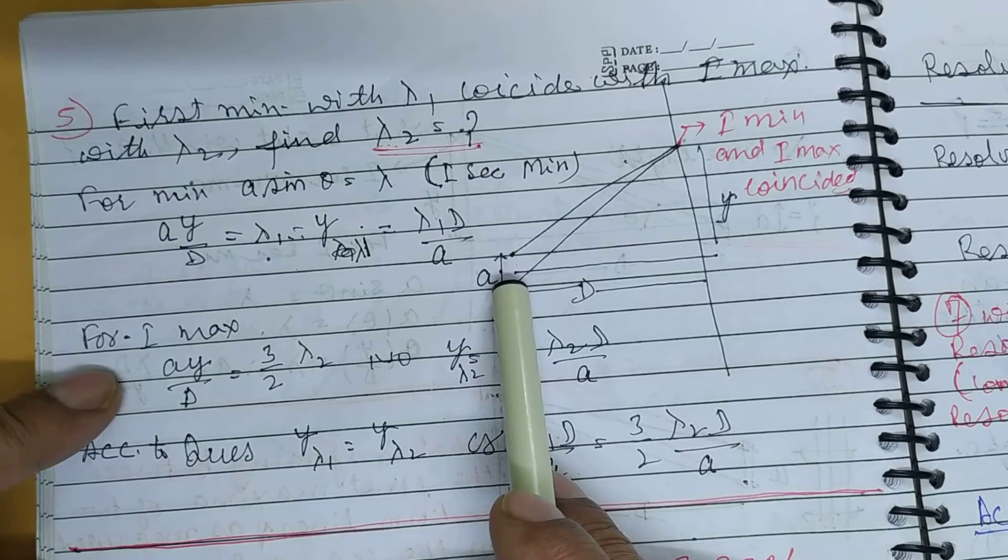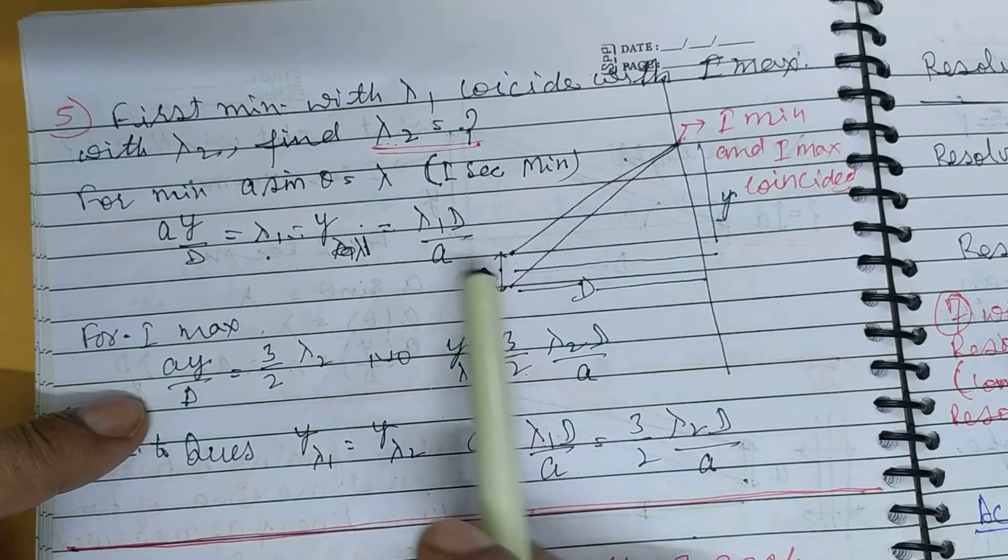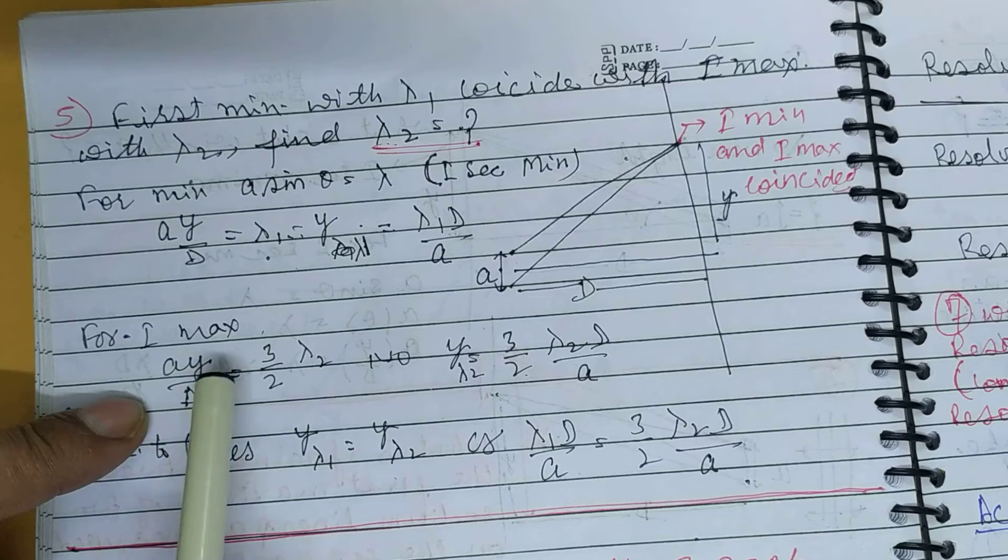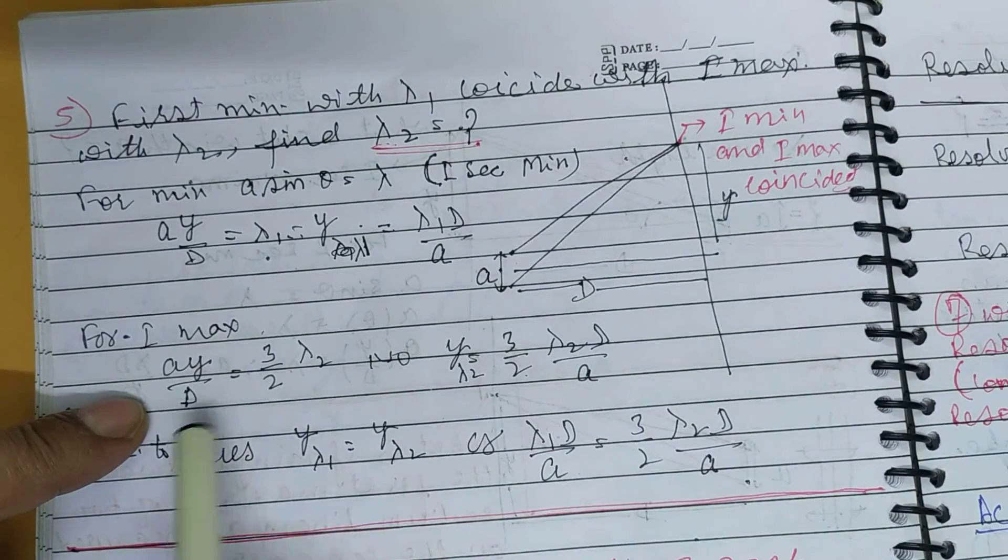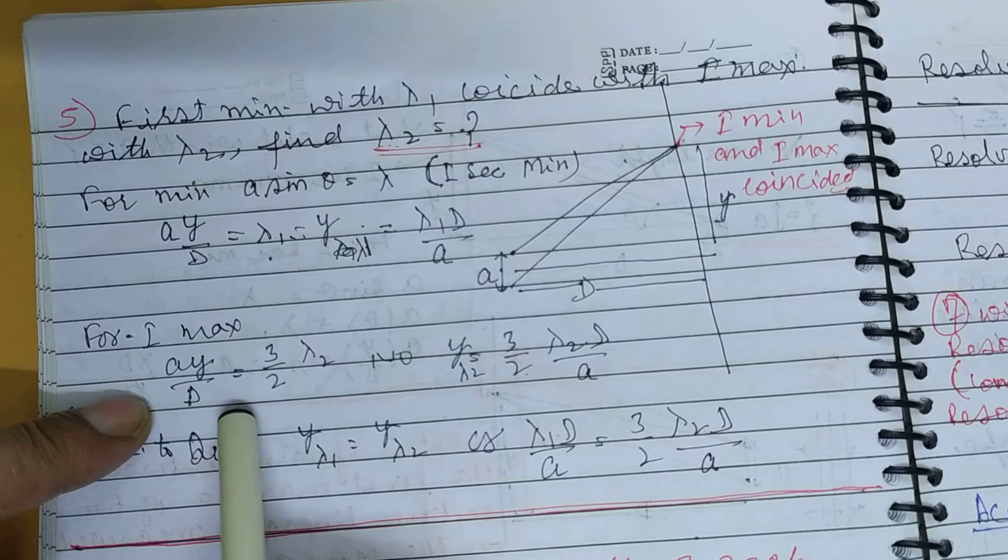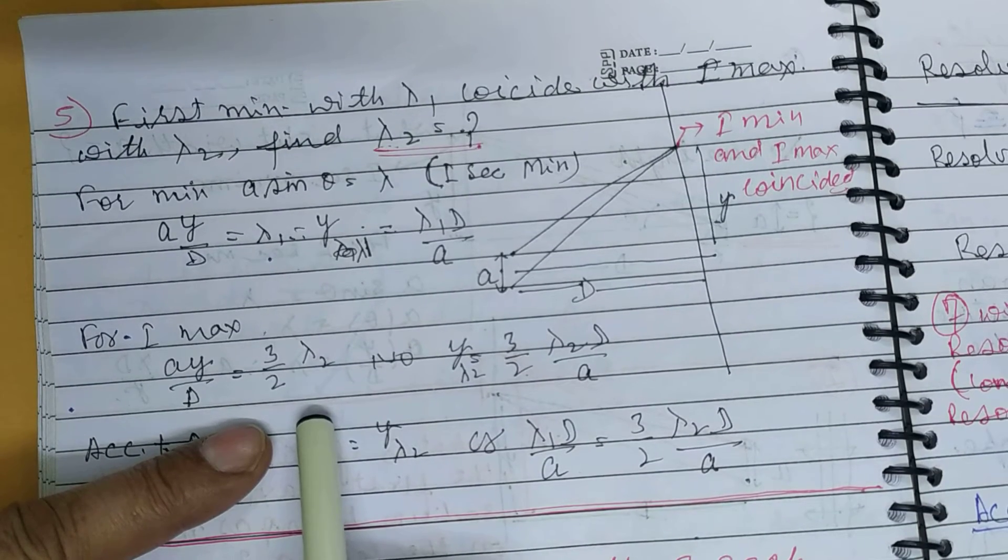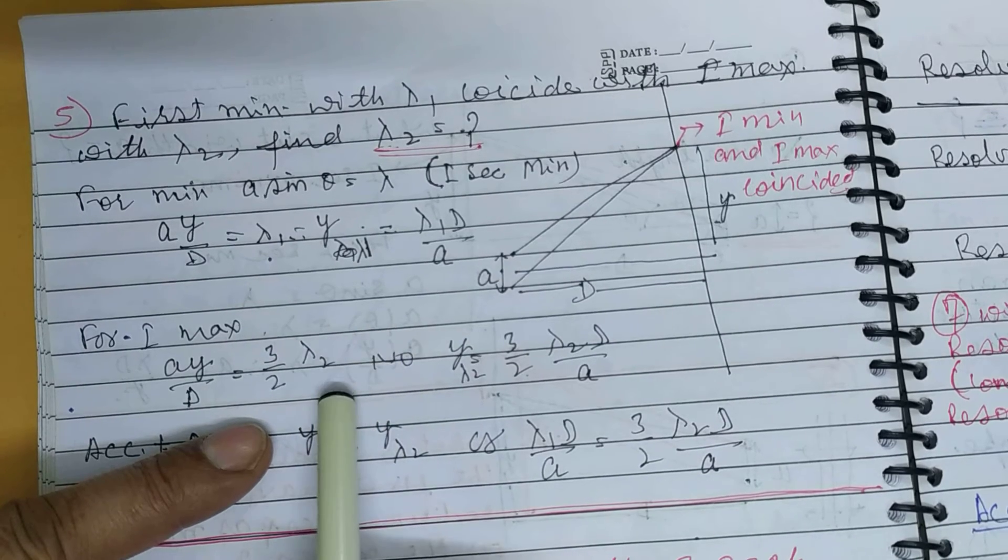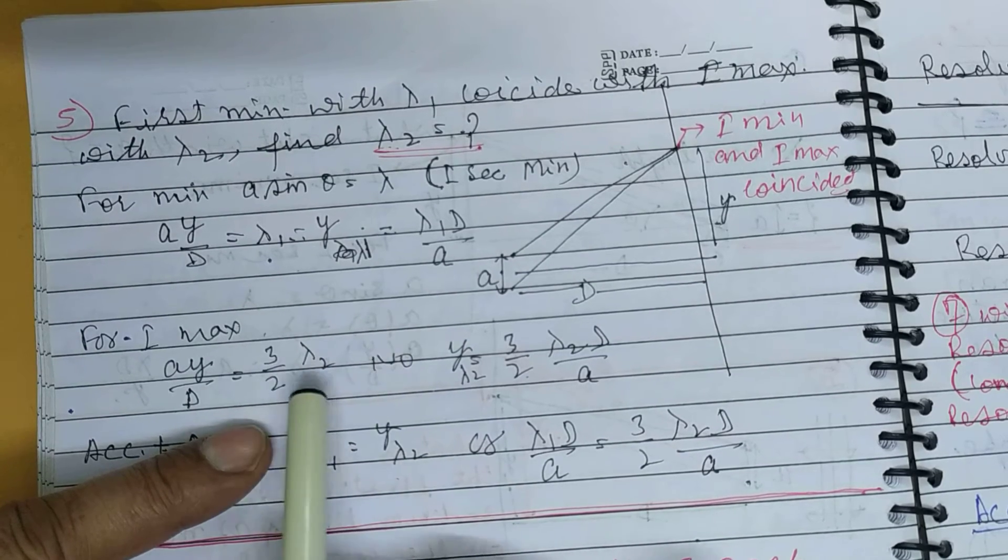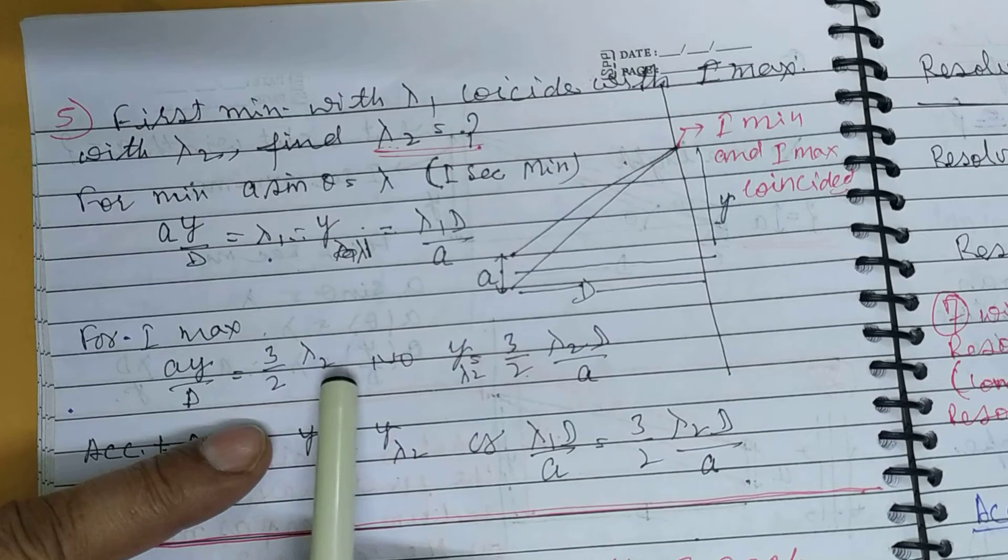A sin theta, where sin theta equals y upon d, equals 2n plus 1 times lambda by 2. For first secondary maximum, n equals 1, so you get 3 by 2 lambda 2.